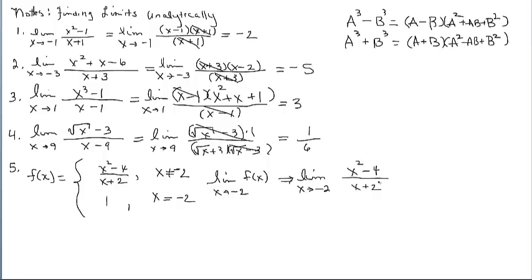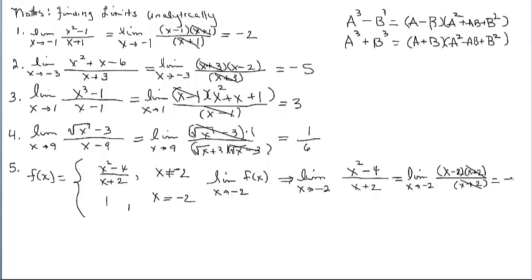So I'll rewrite the problem — I need to find the limit as x approaches negative 2 of only the rational piece. If you plug negative 2 in, you get indeterminate. Let's factor the numerator, cancel the common factors — which tells us we have a point discontinuity on this line. Now plug in negative 2 minus another 2, which results in negative 4.